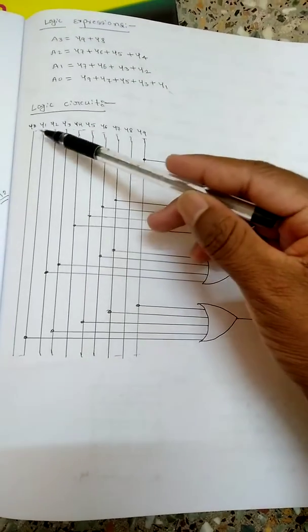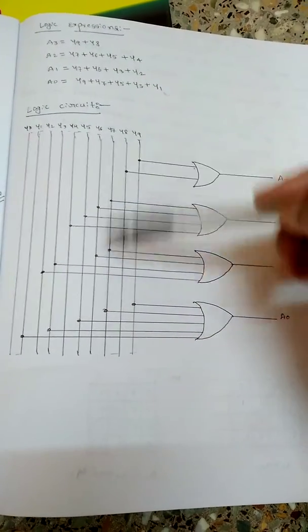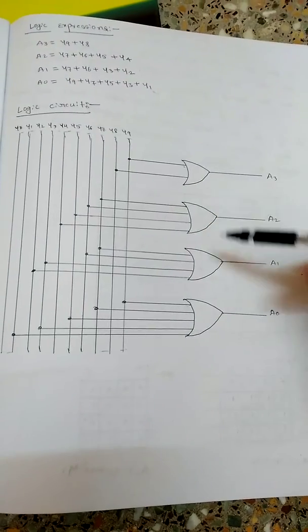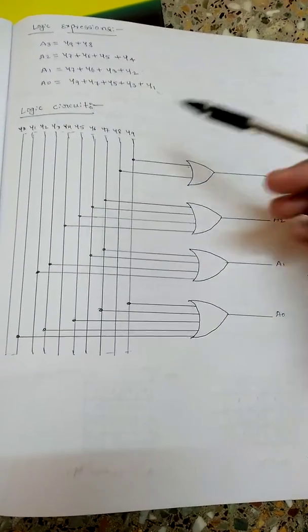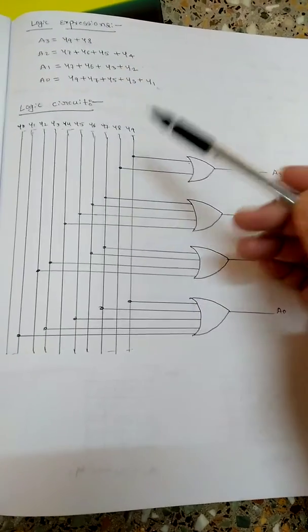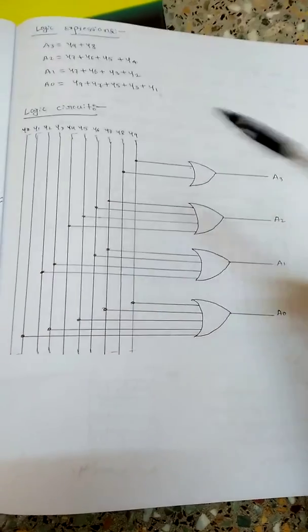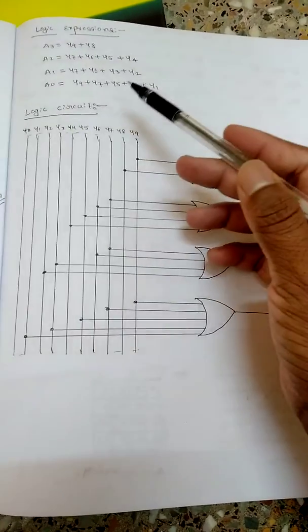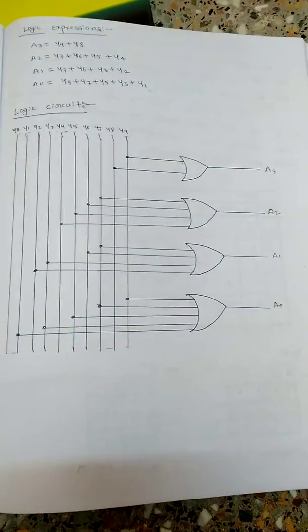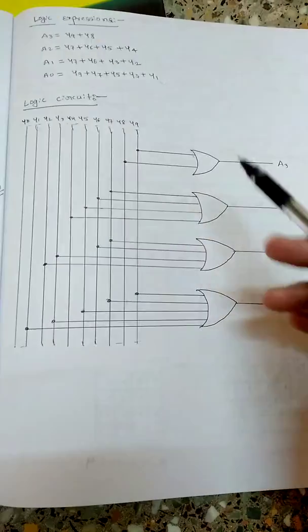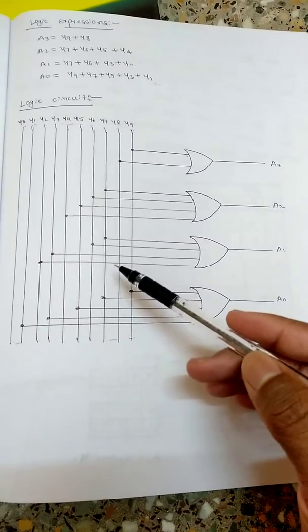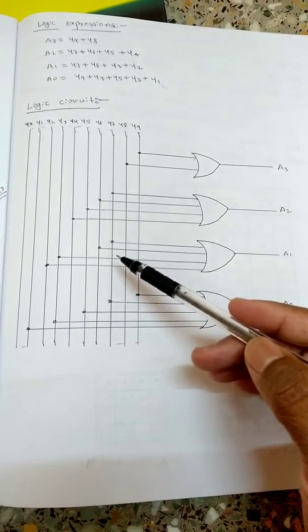It has got inputs from y0 to y9, so y0, y1, y2, y3 up to y9 are the inputs. Then take four OR gates. These are the four OR gates. For a3, what are the terms? Nine and eight, y9 and y8, so y9 and y8 you short here. Then for a2, seven, six, five, four, I am going to short here.